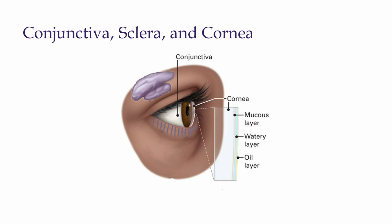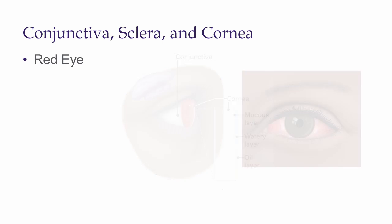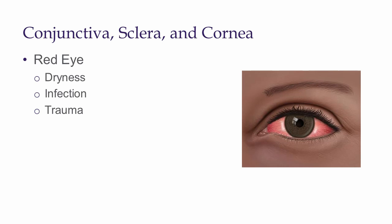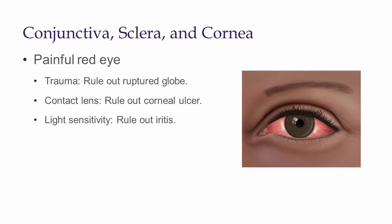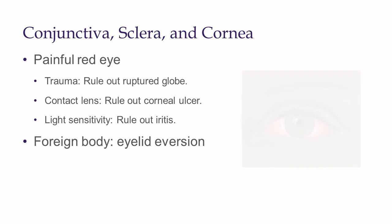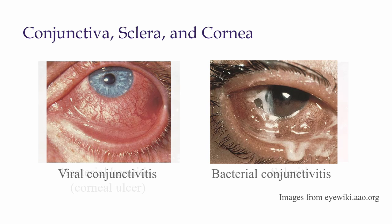The conjunctiva is a thin sheet of mucosa that covers the white of the eye, or the sclera. A penlight or direct ophthalmoscope can be helpful for bedside examination of the conjunctiva, sclera, and cornea. The conjunctiva can become red when there is dryness, infection, trauma, or inflammation. When assessing any patient with a red eye, it is important to identify vision-threatening causes — a painful red eye is almost always an ophthalmic emergency. A history that includes trauma, contact lens wear, and light sensitivity is always concerning; in these scenarios, a ruptured globe, corneal ulcer, and iritis should be ruled out respectively. If a patient reports a history suggesting a foreign body on the ocular surface, eyelid eversion can be performed to look for it. These are some pictures of conditions you may encounter in your clinical setting.